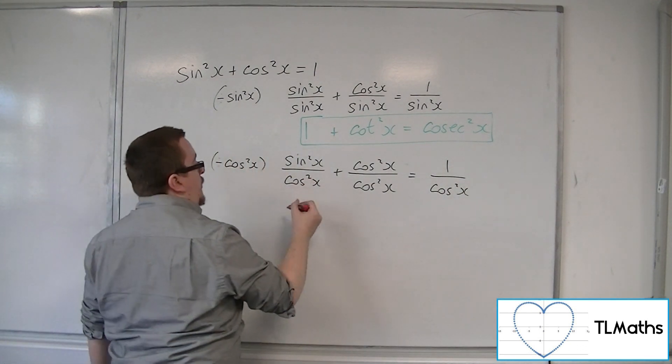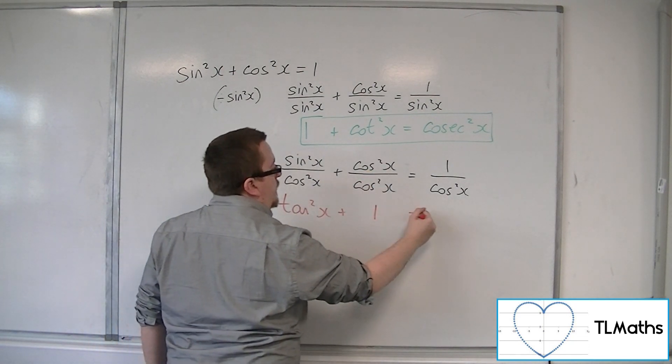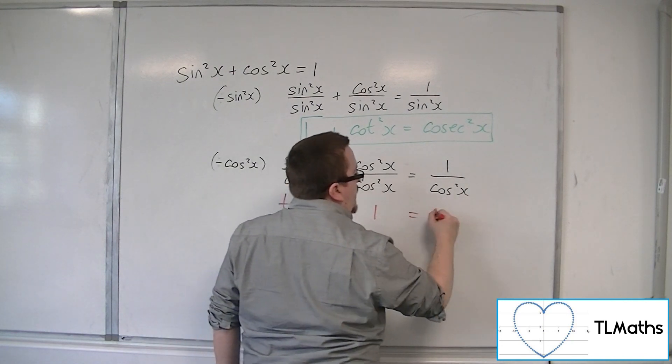So, sine squared over cos squared, well, that's tan squared. Cos squared over cos squared is 1. And 1 over cos squared is sec squared.